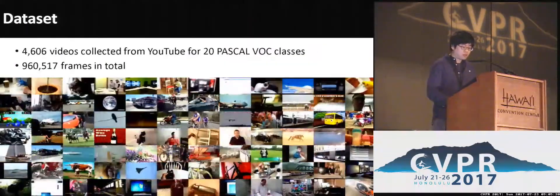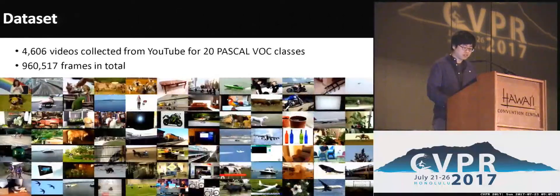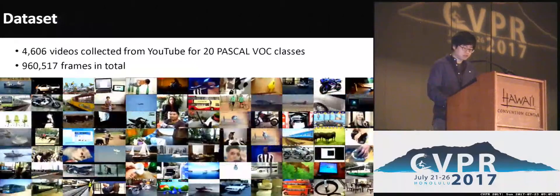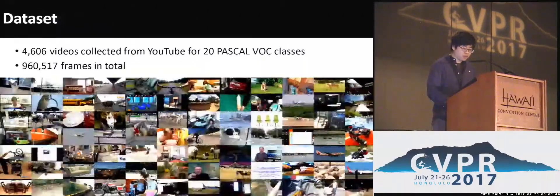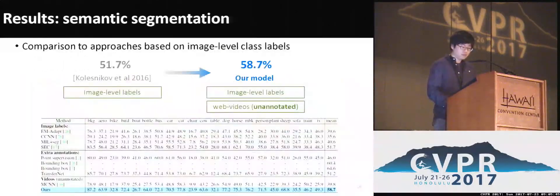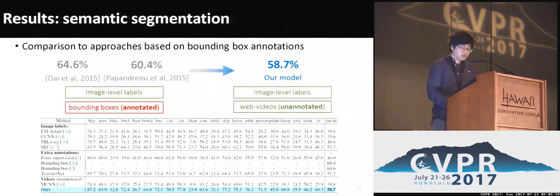For experiments, we collected videos from YouTube for 20 Pascal VOC classes, resulting in more than 4,000 videos containing diverse aspects of objects. We used the videos to train our model and evaluate performance on the Pascal VOC dataset. Compared to approaches based on image-level labels, we achieved substantially improved performance using videos. Compared to approaches based on bounding box annotations, we achieved competitive performance, although web videos can be obtained without extra annotation cost.